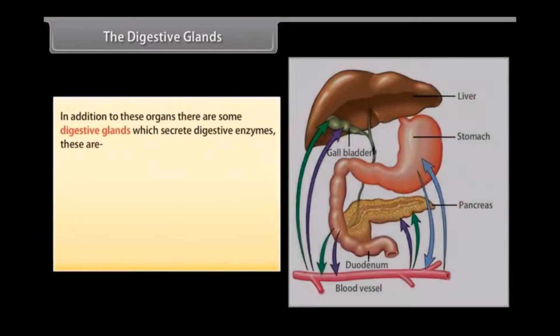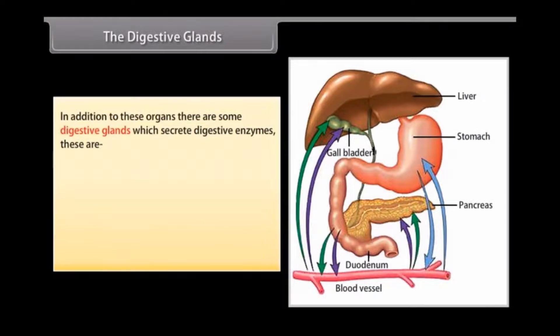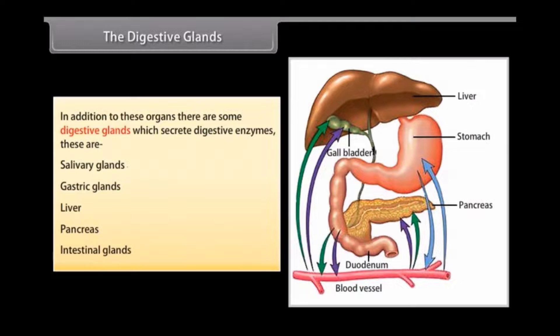In addition to these organs, there are some digestive glands which secrete digestive enzymes. These are: salivary glands, gastric glands, liver, pancreas, and intestinal glands.